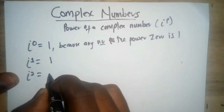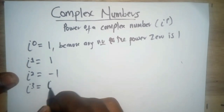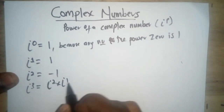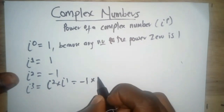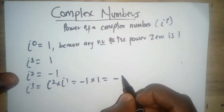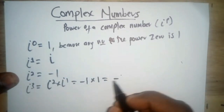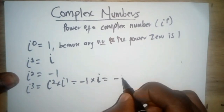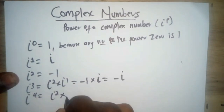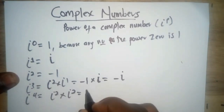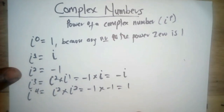i to the power two is negative one. Now i to the power three is just i to the power two times i to the power one. So we have i squared, which is negative one, times i to the power one, which is just i — so we have negative i. Now i to the power four is negative one times negative one, which gives us one.